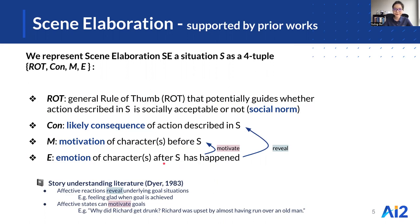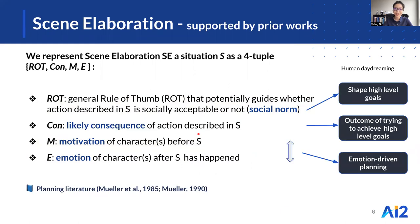For example, affective reactions reveal underlying goal situations, like whether the goal is achieved as a consequence, and affective states can also motivate goals. Finally, these choices are also inspired by the human daydreaming process, which involves the interaction of having high-level goals and trying to achieve them, such as being love-giving, as well as the interaction of emotions revealing underlying motivations and motivations resulting from emotions.